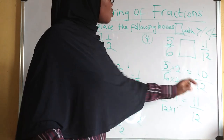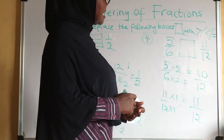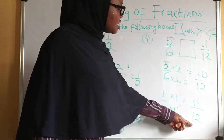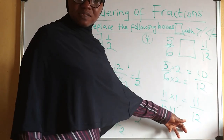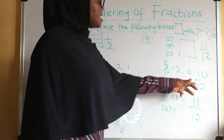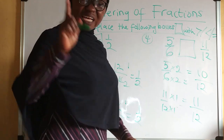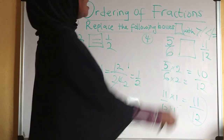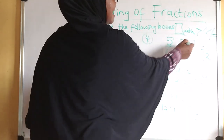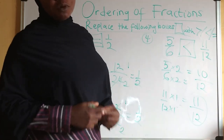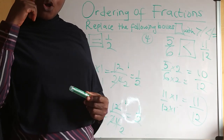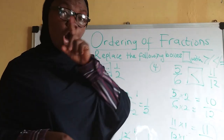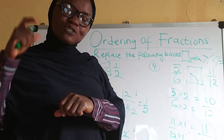Now I have 10/12 and 11/12 — the denominators are the same. Applying rule one: the fraction with the larger numerator is the larger fraction. Since 11 is greater than 10, 11/12 is larger than 10/12, which means 11/12 is larger than 5/6. Therefore 5/6 is less than 11/12. Thank you so much for watching this video — please give it a thumbs up, share with friends and family, subscribe, and smash the notification bell so you get notified when I upload. See you in the next video!